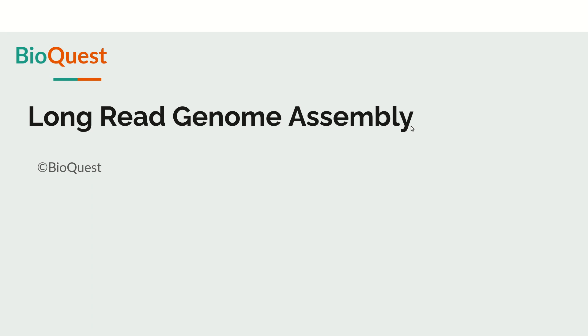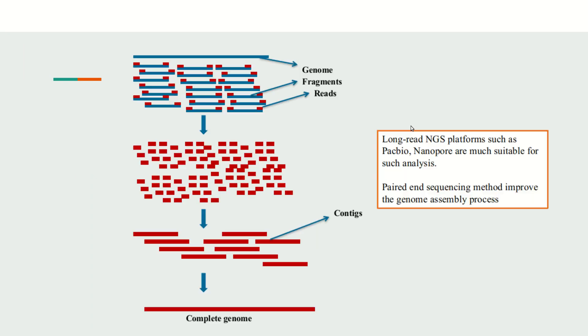Hello friends, in this video series we will explore various long-read genome assembly tools. In a genome assembly process, first we do the sequencing to get the raw reads. The raw reads can be obtained either from short-read NGS platforms such as Illumina or Ion Torrent, or from long-read NGS platforms.